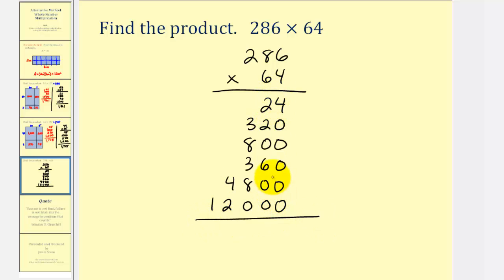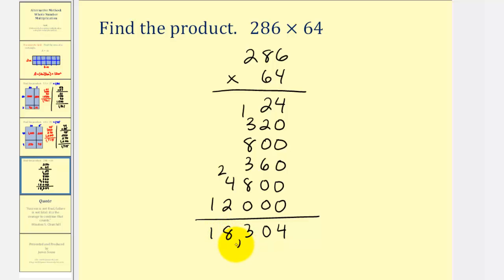Now we can add these to find the product. We have a 4 in the ones place value, 10 in the tens place value, so we'll have a 0 in the tens and carry a 1 to the hundreds. Then 4 plus 8 is 12, plus 3 is 15, plus 8 is 23 — so a 3 in the hundreds and carry 2 to the thousands. Then 2, 6, 8 gives us an 8 in the thousands and a 1 in the ten-thousands. So our product is 18,304. I hope you found this explanation helpful.